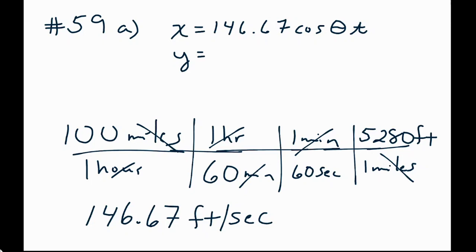But I am ready to finish my y component, which needs the initial height. That's three, the baseball is batted at a height of three. And then well I got my initial velocity, this time with the sine of theta times t.